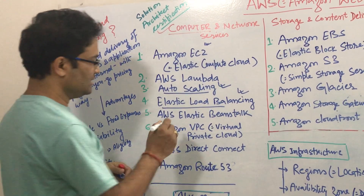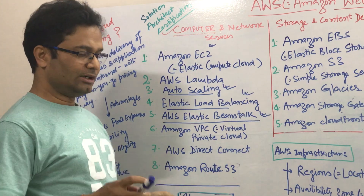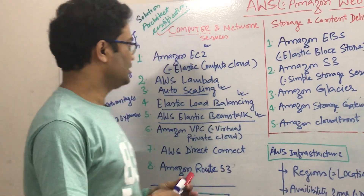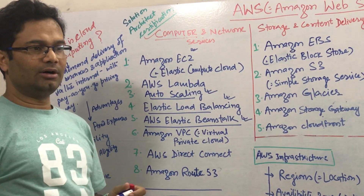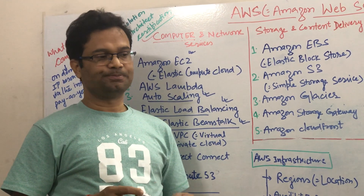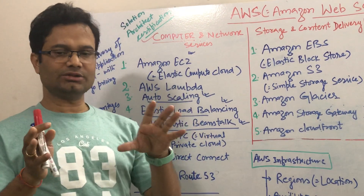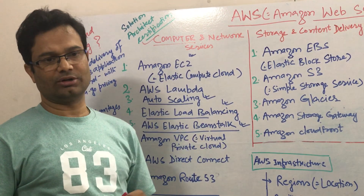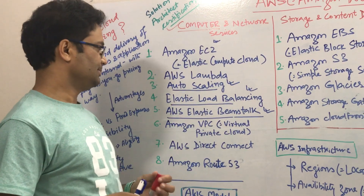Next is Elastic Beanstalk. Suppose you want to set up or develop one website that requires EC2, load balancing, scaling, and many software like PHP, .NET, Node.js, and many databases. All those things you can get in one shot with the help of Beanstalk. That is also one of the very attractive features of Beanstalk.